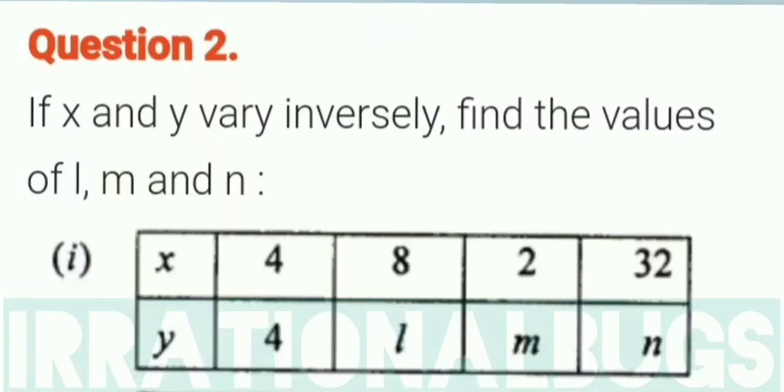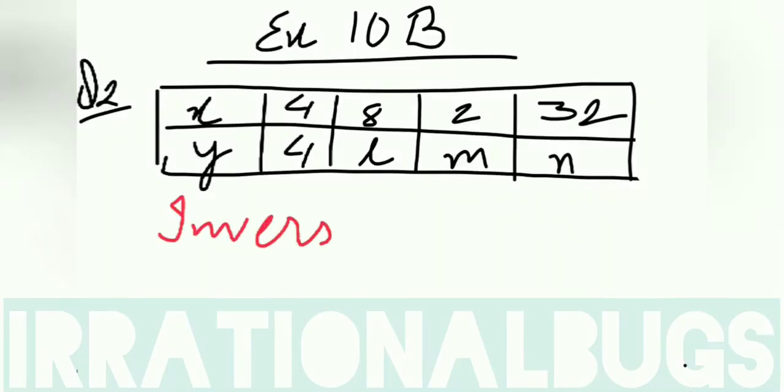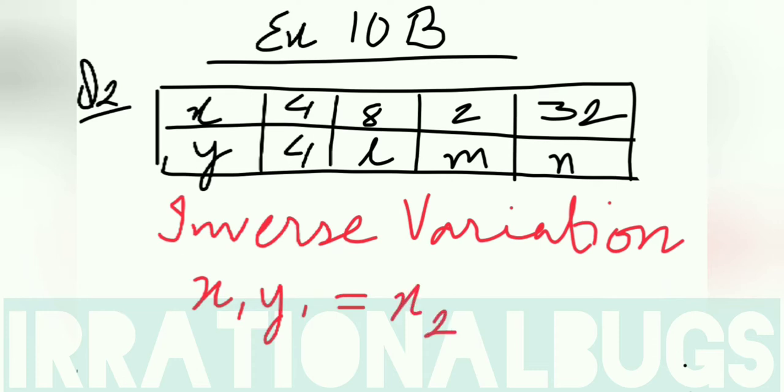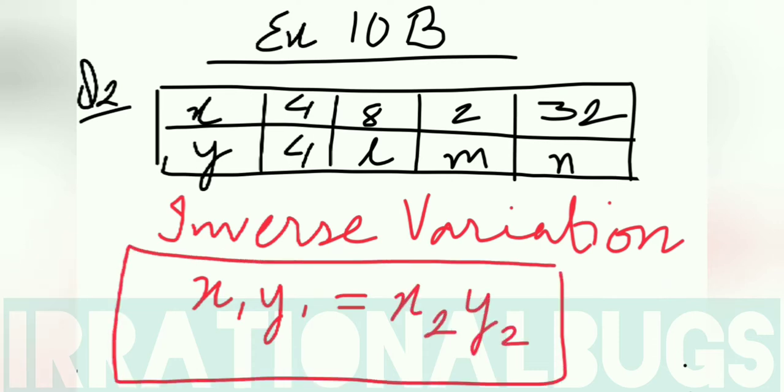Question number 2 is: if x and y vary inversely, find the values of l, m, and n. In the table given x and y values - when x is 4, y is 4; when x is 8, y is l; x is 2, y is m; x is 32, y is n. Already given inverse variation. Inverse variation means x1 y1 is equal to x2 y2. That means x1 multiply y1 is equal to x2 multiply y2. Direct division, inverse multiply.